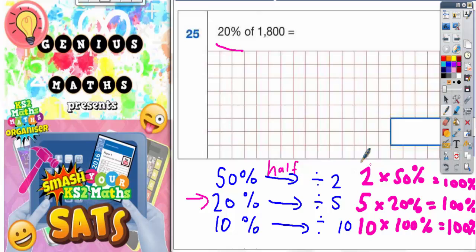Because 5 lots of 20 makes 100%. So you could just start with your 1,800 and do a short division and divide it by 5. Let's have a look where that takes it.